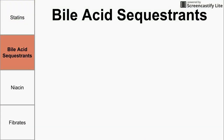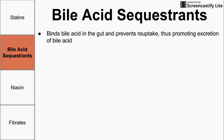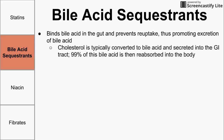The next class is bile acid sequestrants. These aren't used quite as often, but they are a good alternative to statins for people on the contraindications list — pregnant women, some people with liver disease, and people taking other drugs that might interact with statins. Bile acid sequestrants essentially bind bile in the gut and prevent its reuptake. Cholesterol is typically converted to bile acid and secreted into the GI tract, so one way to remove cholesterol is to convert it to bile acid and dump it into the GI tract.